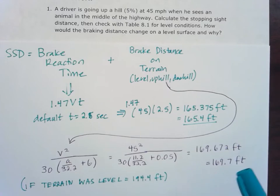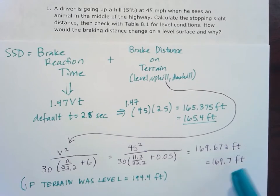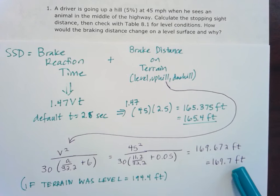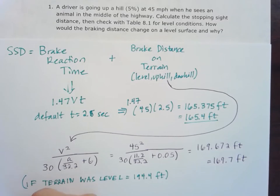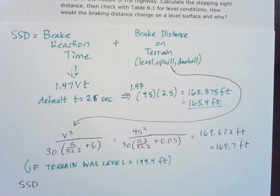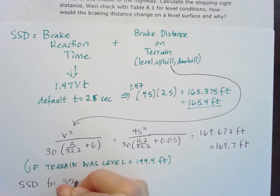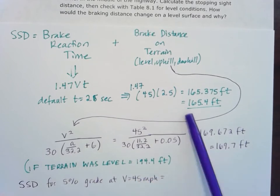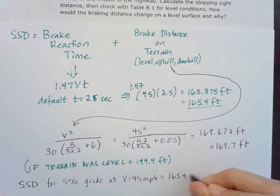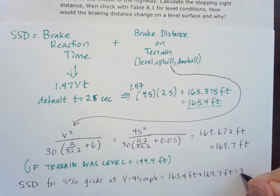That uphill grade is helping us with our deceleration. So let's go ahead and compute this stopping sight distance now for our 5% uphill. For our 5% grade at V equals 45 miles per hour, we take the 165.4 and add it to the 169.7 feet. And when we add those together, we do get 335.1 feet.